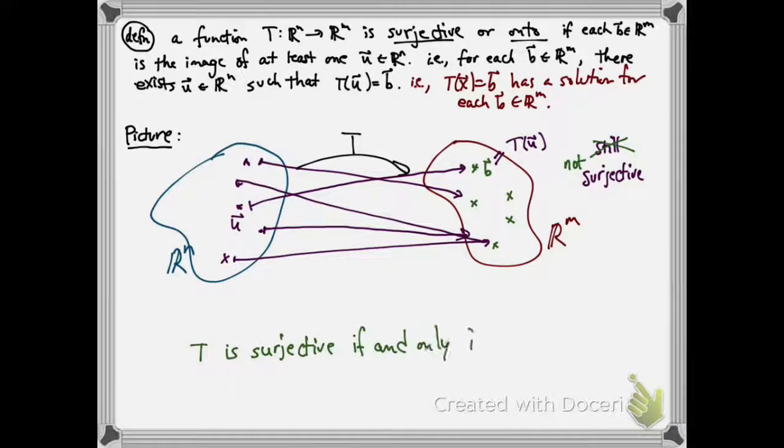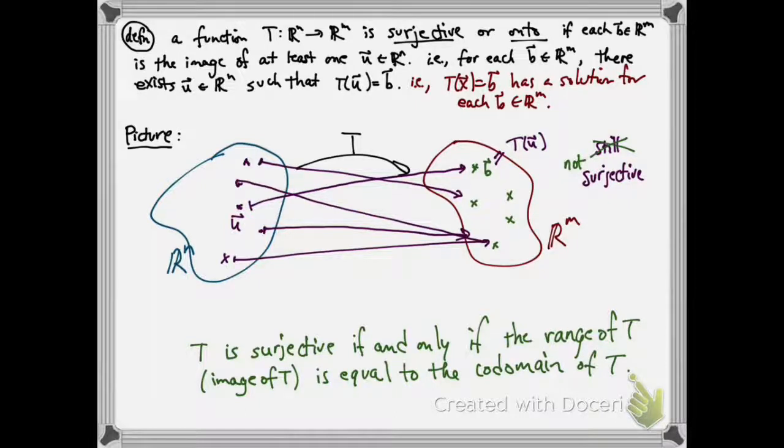So in other words, t is surjective if and only if the range of t, or the image of t, is equal to the co-domain.